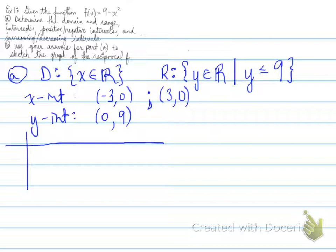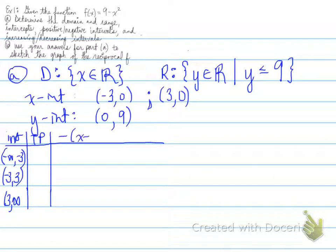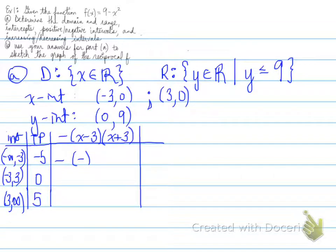Next we look at positive and negative intervals. We use a table with the intervals: negative infinity to negative 3, negative 3 to 3, and 3 to infinity — determined by the zeros. We need the factored form: negative times (x minus 3) times (x plus 3). Test points are negative 5, 0, and 5 for the three intervals. Note there is a leading negative that we must include, as it changes the sign of the function.